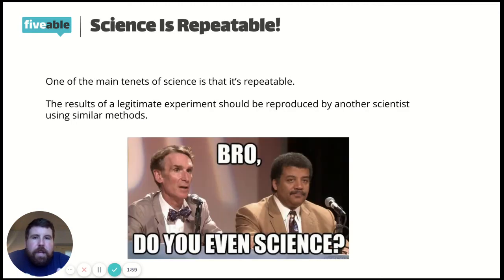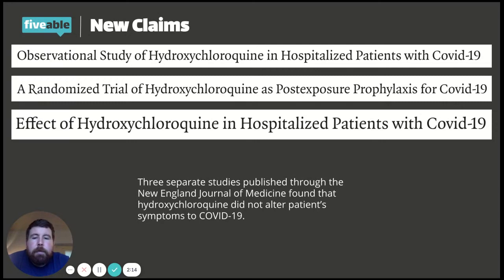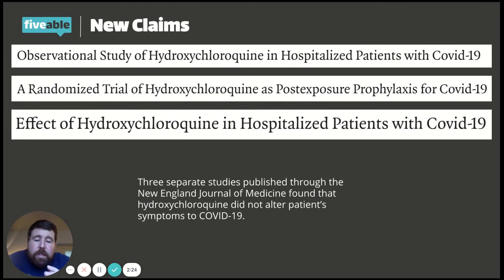I also want to point out that science is repeatable. Generally speaking, a legitimate experiment should be reproduced by any other scientist using the same methods. Interestingly enough, a few studies that came out by the New England Journal of Medicine found that hydroxychloroquine did not alter the patient's symptoms of COVID-19. They gave it to people before and after they were hospitalized, and unfortunately, it did not lower or change anything. So that first study was not repeatable.